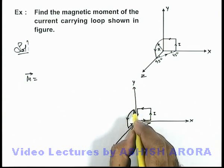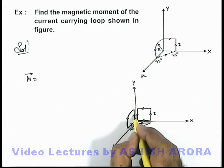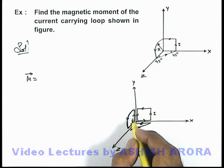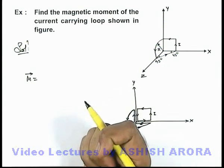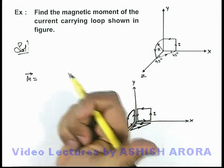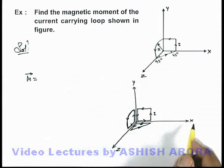This is the quarter circular segment which is having area pi r square by 4. If we have a look at the right hand thumb rule, we can see its magnetic moment is in the x direction.